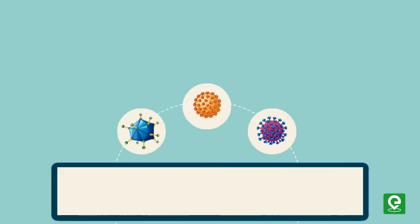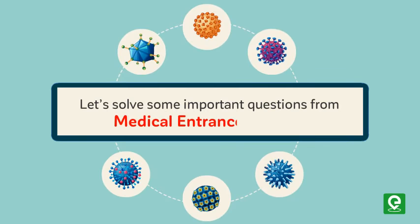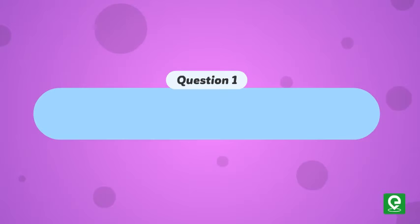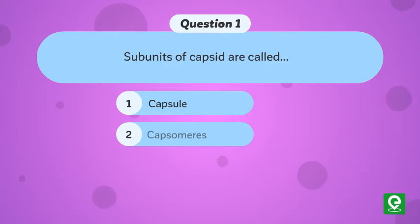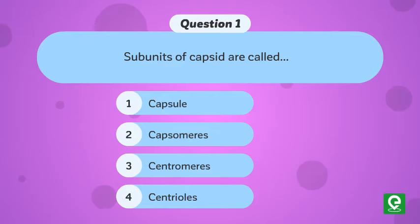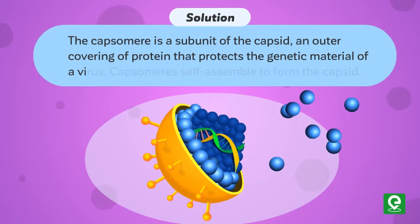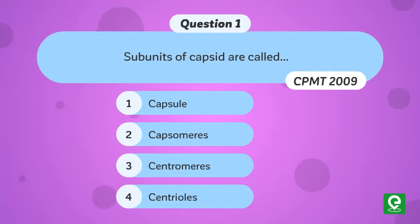Question one: subunits of capsid are called — (1) capsule, (2) capsomeres, (3) centromeres, (4) centrioles. This question was asked in CPMT 2009. Solution: capsomeres are the subunits of a capsid, an outer covering protein that protects the genetic material of a virus. Capsomeres self-assemble to form the capsid. Hence option two is correct.